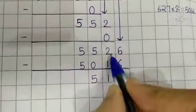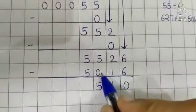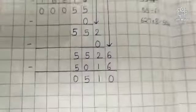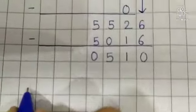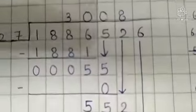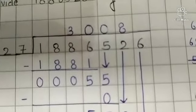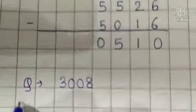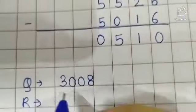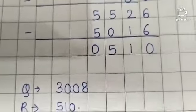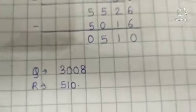6 minus 6 is 0, 2 minus 1 is 1, and 5 minus 0 is 5. 5 minus 5 is 0. So now, the quotient is 3008, and the remainder is 510. Complete this question.